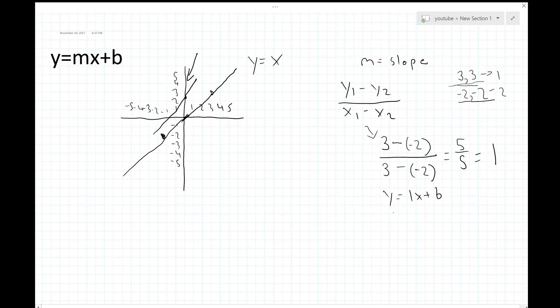We have y equals 1x plus 0 which can be simplified to y equals x and that's where we derive y equals x. That's the equation of this line and this works for every single straight line on a graph following this exact y equals mx plus b formula.